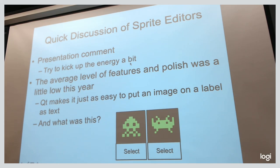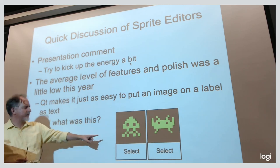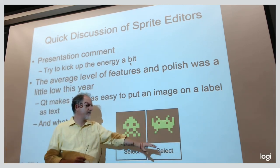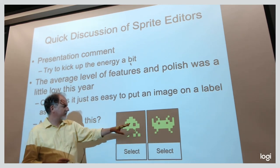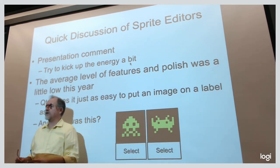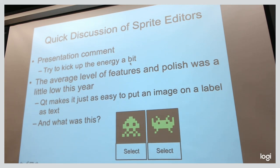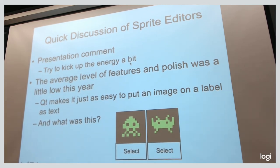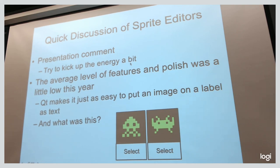Buttons can have images as easily as text — that's a good thing. I was a little surprised to see something like a film strip of frames with a plain 'select' button down here. There are things you can do in Qt. Don't fall back 50 years in your user interfaces. Try to have a modern, clean view of all this kind of stuff.